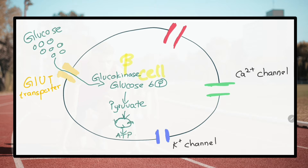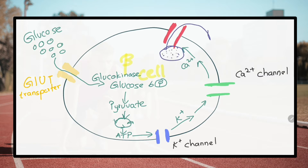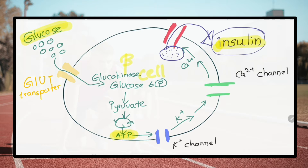After a meal, normal blood glucose rapidly rises. Glucose enters pancreatic cells via GLUT2 channels by facilitated diffusion. As the Vmax of glucokinase is high, it acts as a sensor to enhance insulin secretion from pancreatic beta cells by converting large amounts of glucose into glucose-6-phosphate.